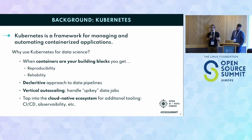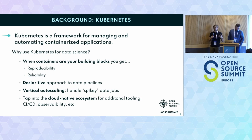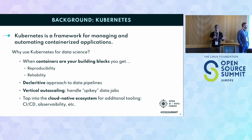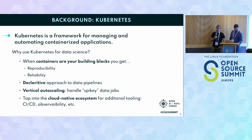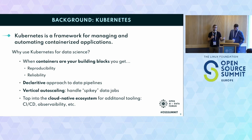A good example of that is vertical auto-scaling, a key feature of Kubernetes. If you have a job that's very high in usage — maybe it's only once a week or once a month — you can define parameters that will scale up the compute and even scale down the cluster to zero when you're not running that job. And you also get a bunch of other things in the Kubernetes ecosystem that let you integrate easily with CI/CD tooling or observability tooling for a more production-ready data pipeline.